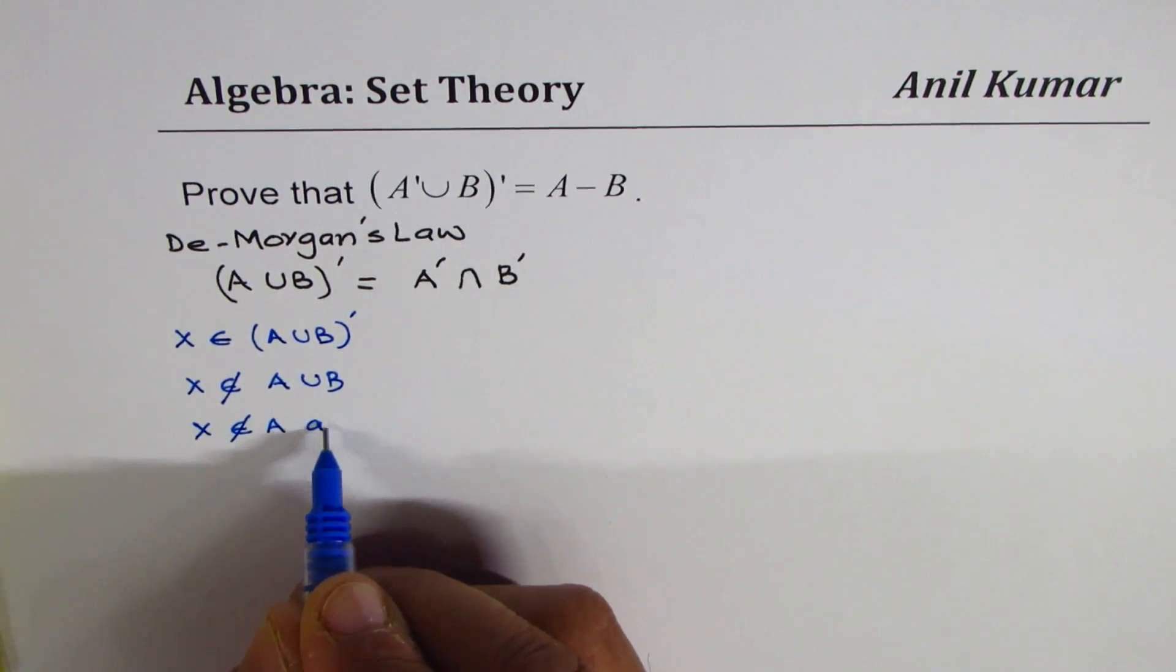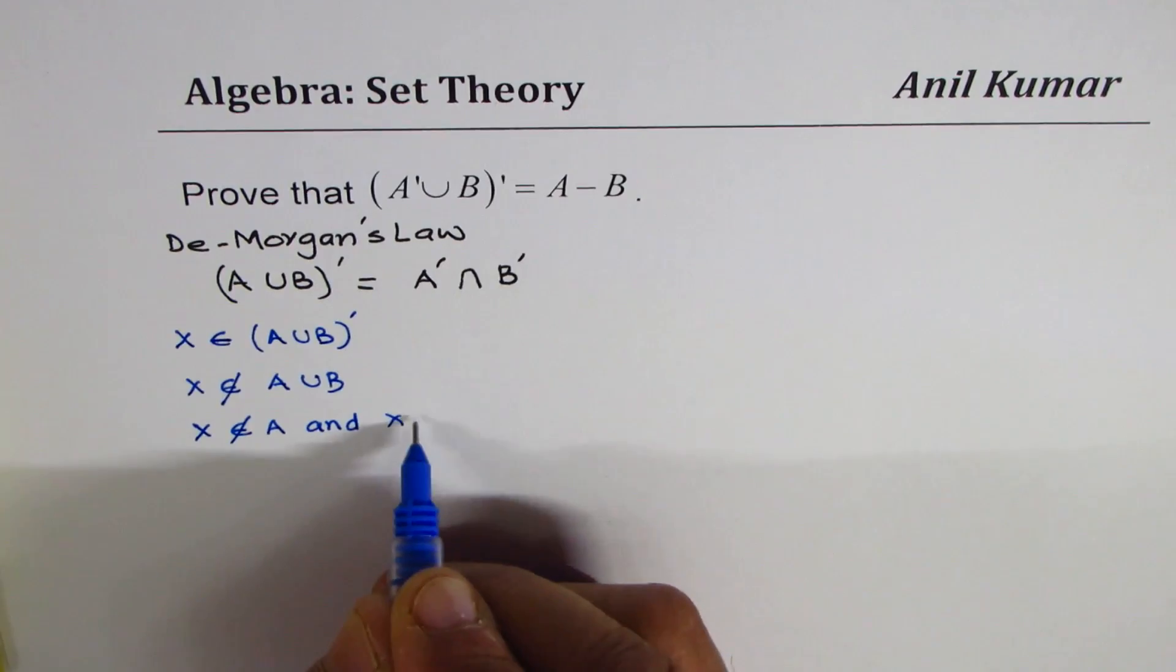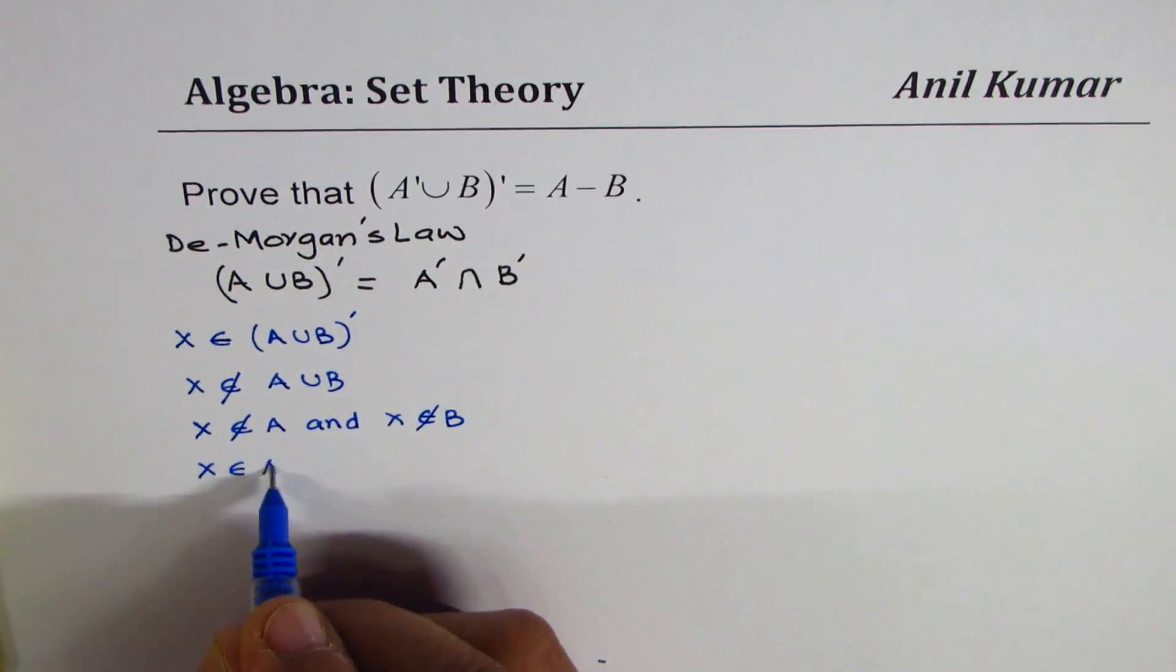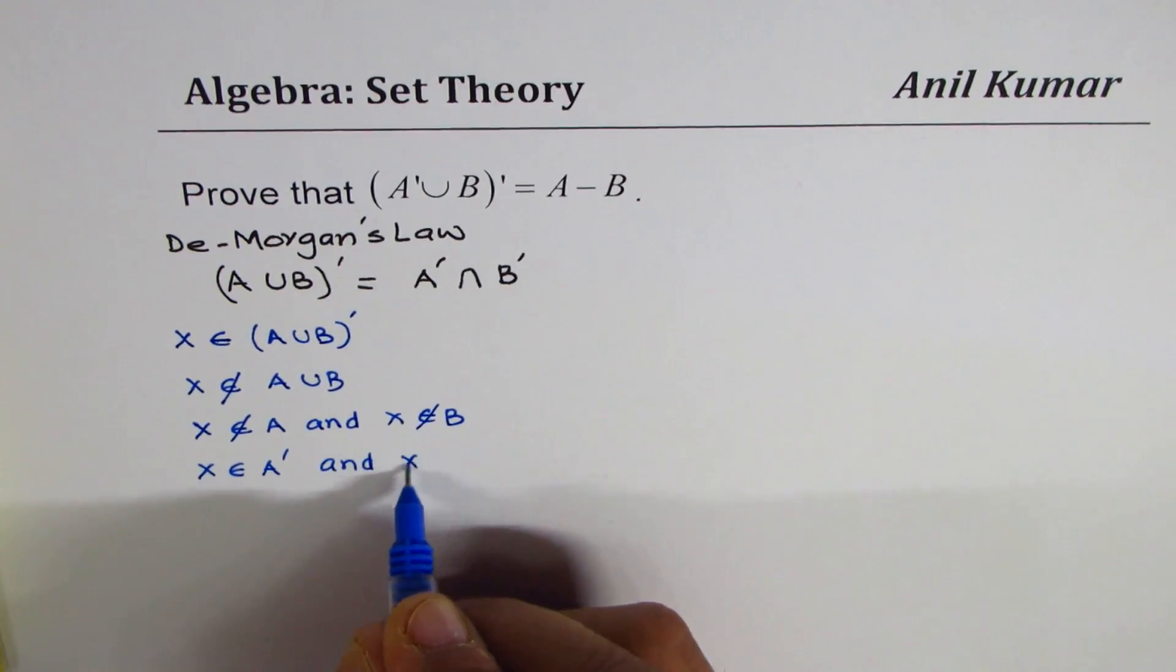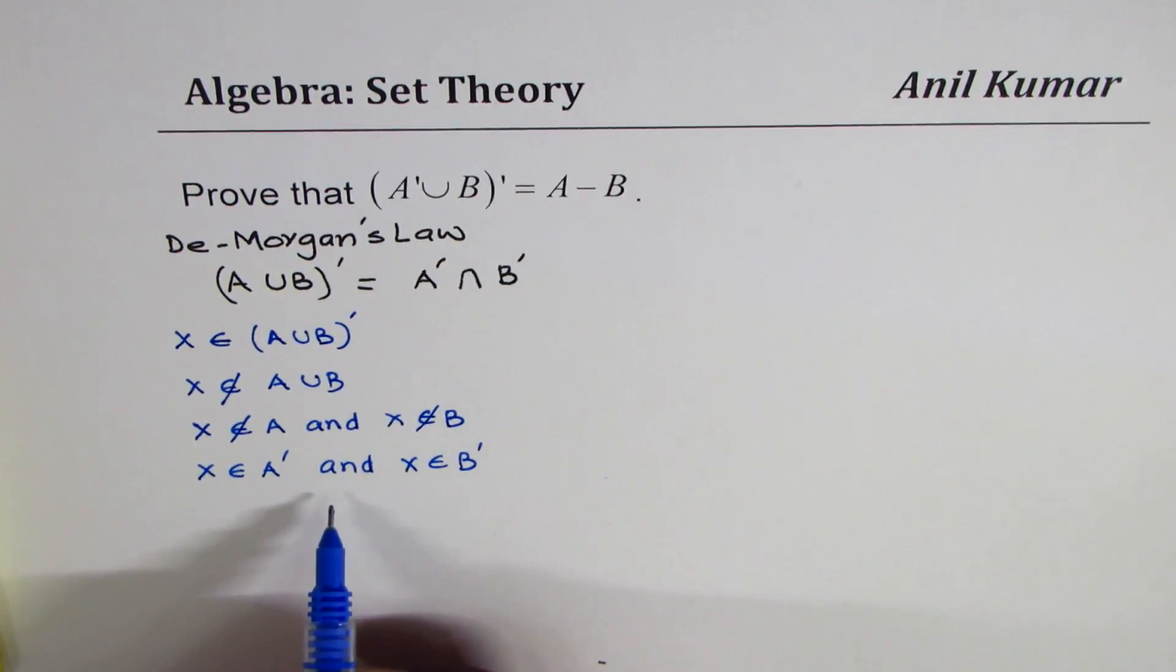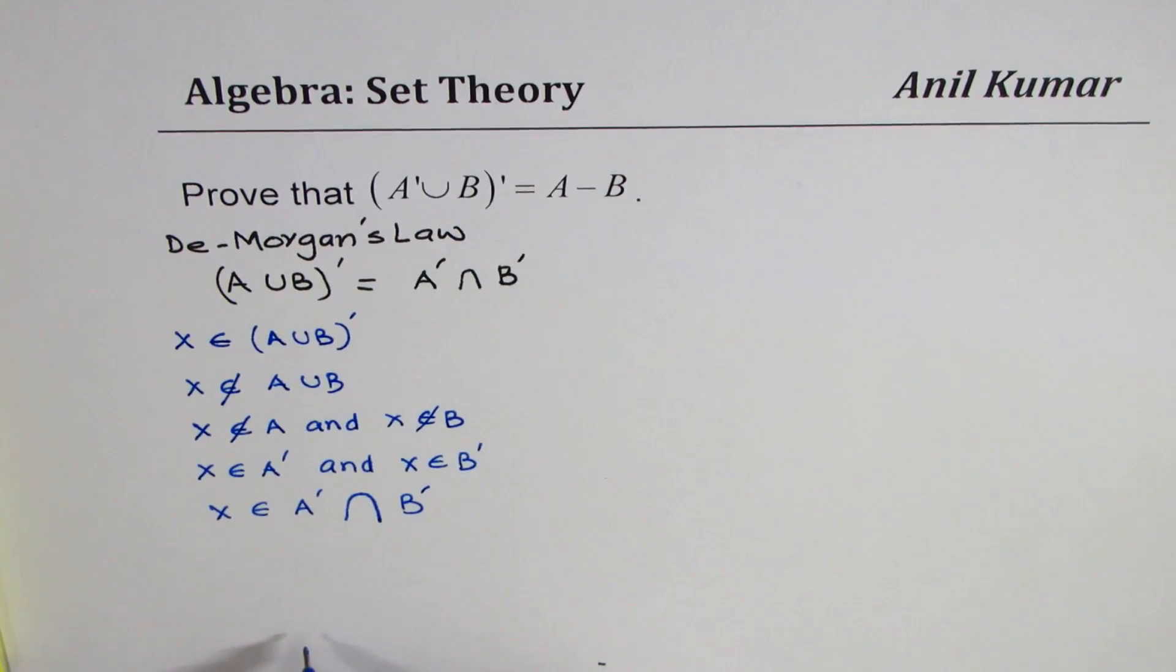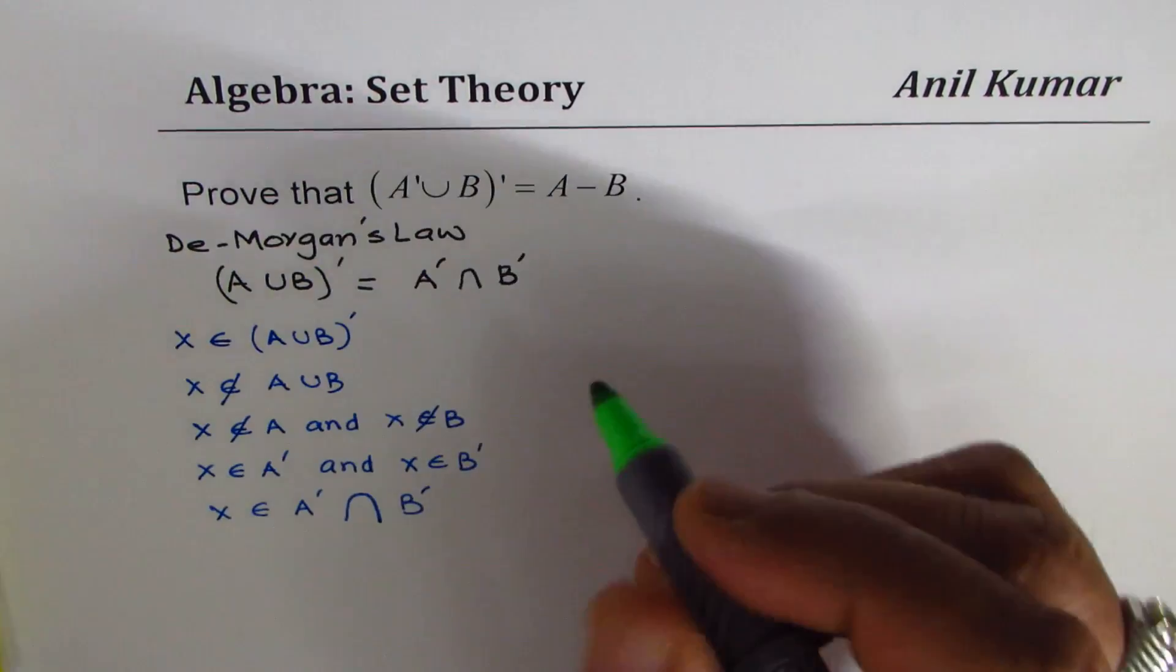We could say this as x does not belong to A and the element x does not belong to B. That really means that x belongs to A complement and x belongs to B complement. Now with the and operation it really means that x belongs to A complement intersection B complement.